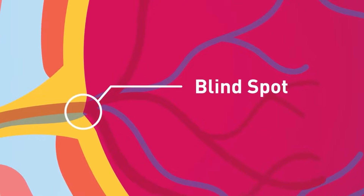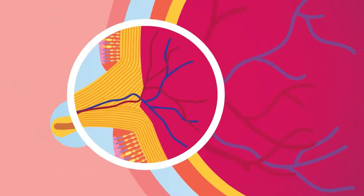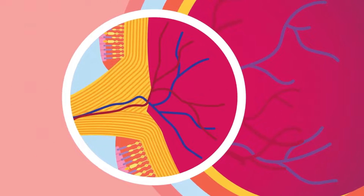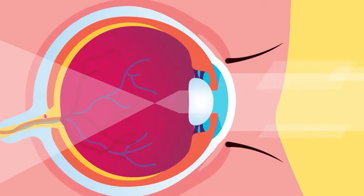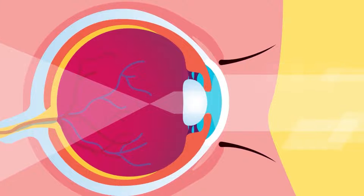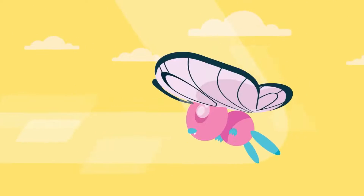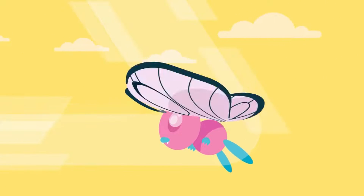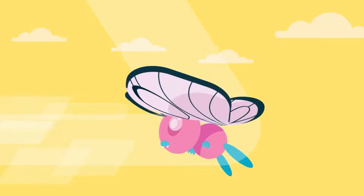The blind spot is the place where nerve fibres connecting rods and cones leave the eye, and it has no photoreceptor cells. The process of seeing, in a nutshell, is mediated by the ability of cells in the retina to absorb light rays from objects that enter our eyes.